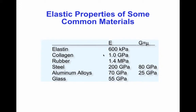There is a wide variety of values for different materials. Steel has a Young's modulus of 200 GPa, whereas collagen, which is a component of ligaments and tendons, is only 1 GPa, and elastin, which is a component of blood vessels and other connective tissues like skin, is only 600 kPa.